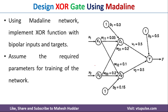This is how the network will look like. Because the XOR function cannot be implemented with a single layer, we need to use multiple layers. This is the input layer, this is the hidden layer, and this is the output layer. X1 and X2 are the two input layer neurons, Z1 and Z2 are the hidden layer neurons, and Y is the output layer neuron.